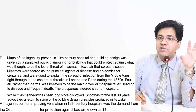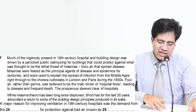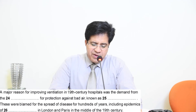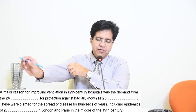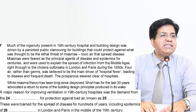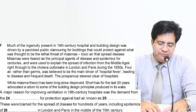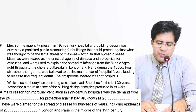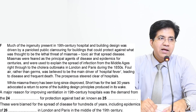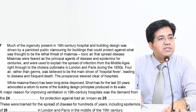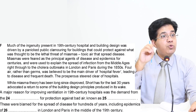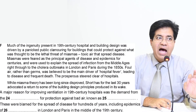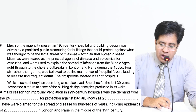They use the word 'miasma' and then hyphen 'toxic air' — so they have described the word. The answer for bad air is 'miasma.' Unless you concentrate this much, IELTS Reading will become difficult for you. Last question: these were blamed for the spread of disease for hundreds of years, including epidemics of dash in London. Reading Paragraph F: cholera outbreak in London — 'outbreak' means 'epidemic.' Some people will write 'outbreak' and be very confident, but they deliberately want to see whether you know that epidemic and outbreak are similar words. The answer is 'cholera.'